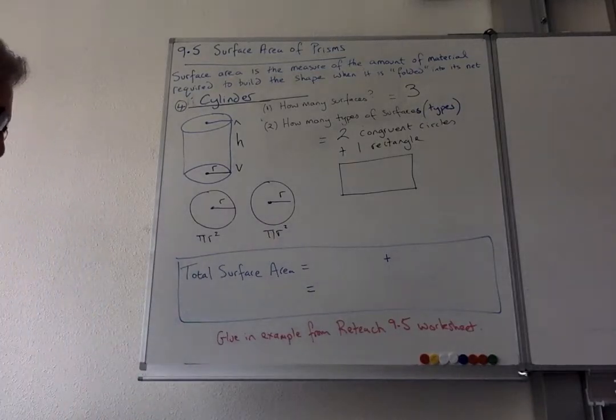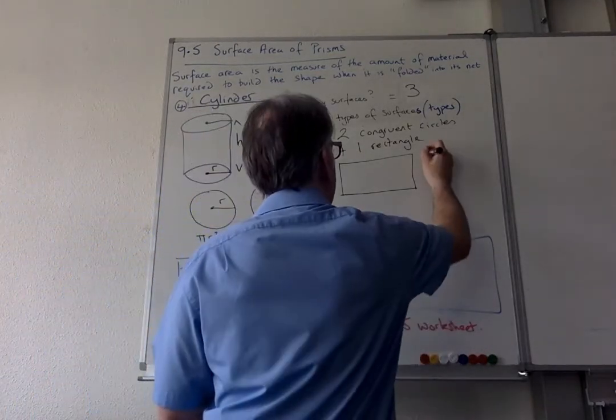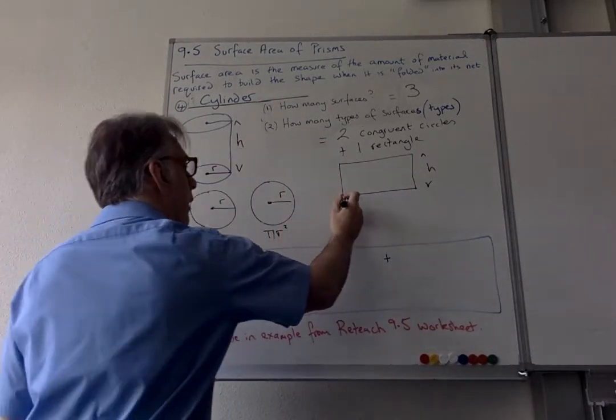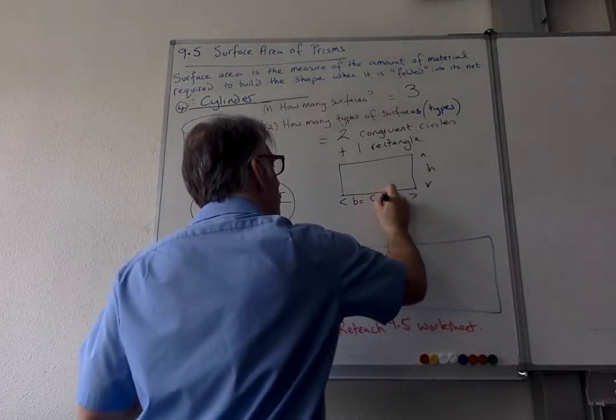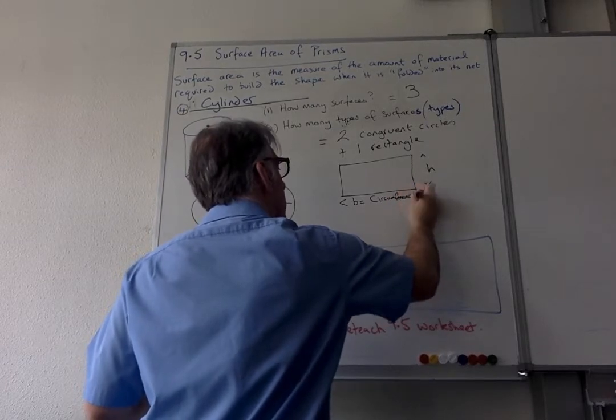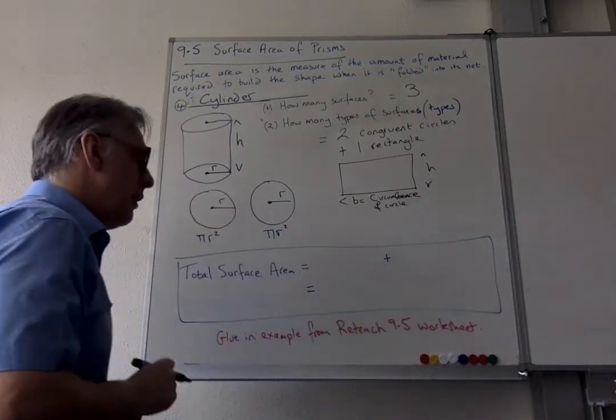On the rectangle, what's important is this dimension here, which mentions the height on here, this one here. The base is equal to the circumference of the circle. That is what's important - it's the circumference of the circle.